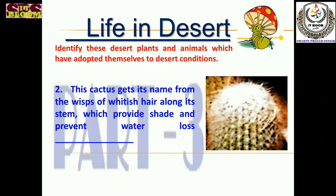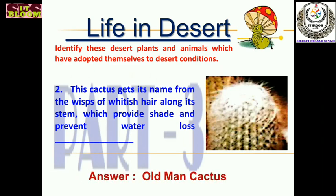The next cactus gets its name from its wisp of whitish hair along its stem, which provides shade and prevents water loss. They can save their water using this wisp of whitish hair, which provides shade and prevents water loss. The answer is the old man cactus — due to their whitish wispy hair, they are called old man cactus.